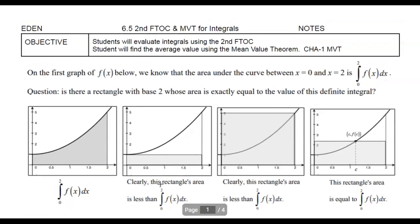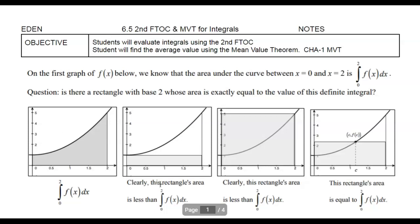Let's say we have some function, and I want to find the integral value from zero to two. We're going to make our function all above the axis so we don't have to worry about net area — it's always going to be positive. If I want to find the integral value and I'm not given the function, I need to find its area somehow. The only idea we've learned involves geometric shapes, so let's talk about a rectangle. If I draw a rectangle from zero to two, I'm forgetting about all of that area above it, so our integral value is going to be a complete underestimate and not very useful.